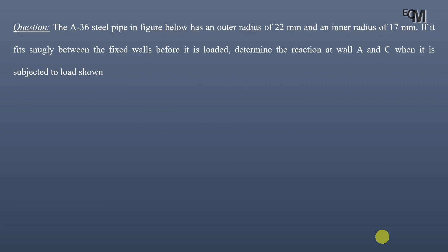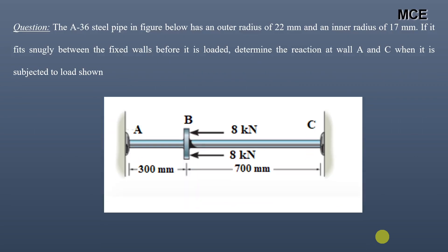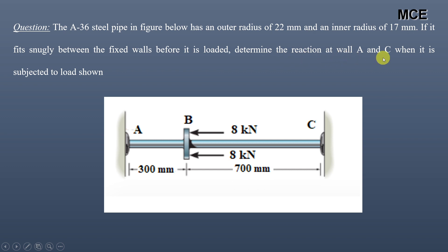Hello and welcome back to Master Civil Engineering. In this video we will learn how to find the reactions for a statically indeterminate axially loaded bar. I have been given a question which states that the A36 steel pipe has an outer radius of 22 mm and inner radius of 17 mm. If it fits snugly between the fixed walls before it is loaded, we have to determine the reaction at wall A and C when it is subjected to the load shown.